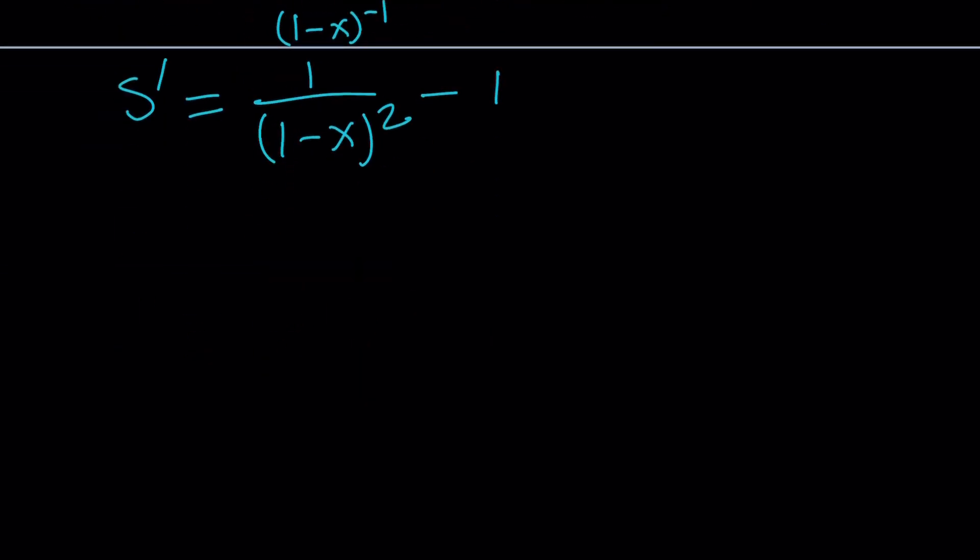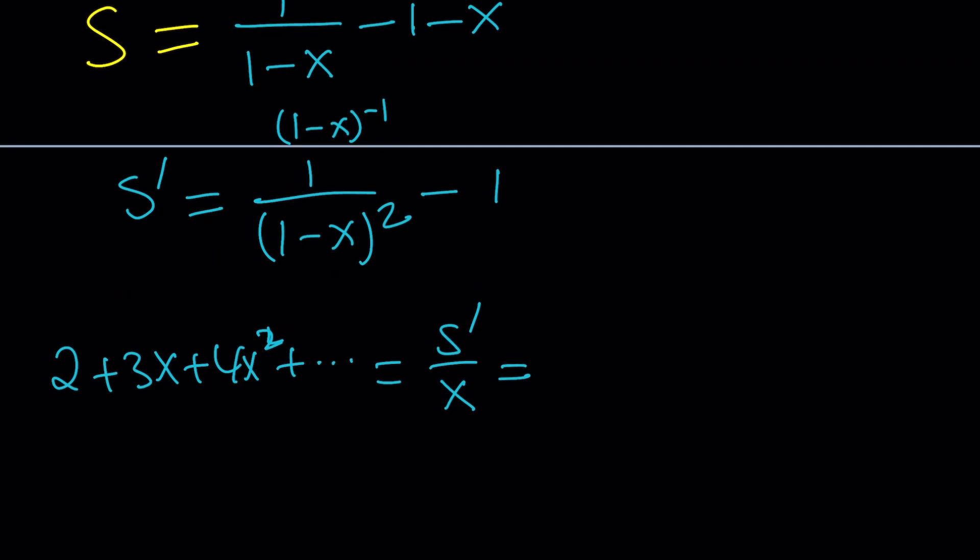Now, to get the sum that we're looking for, which is 2 plus 3x plus 4x squared, remember, we're supposed to differentiate S and then divide by x. But we already differentiated it, so we have S prime. Now, all we have to do is divide by x. And if you divide this by x, you're going to get 1 over x times 1 minus x quantity squared minus 1 over x. So that should be the answer. But let's simplify this a little bit, because when we do the second method, we want to be able to compare our results.